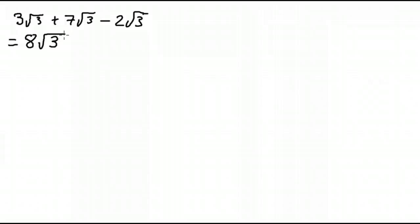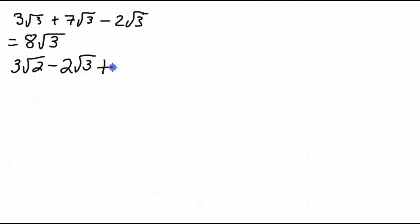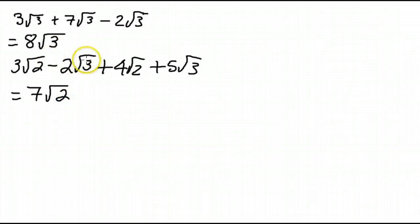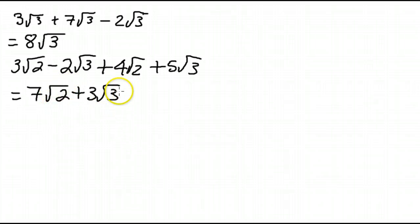What if you have some like terms and some unlike terms? For example, what if we have 3 root 2 minus 2 root 3 plus 4 root 2 plus 5 root 3? In this case, the root 2's are the like terms and the root 3's are also like terms. So we have 3 root 2's plus 4 root 2's giving a total of 7 root 2's, minus 2 root 3 plus 5 root 3 gives plus 3 root 3. Since root 2 and root 3 are unlike radicals, we cannot proceed any further.